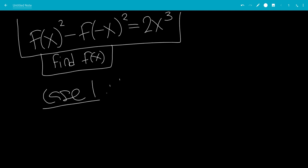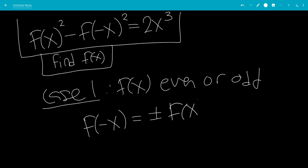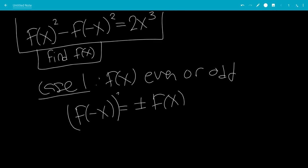Case 1: f(x) is even or odd function. That means f(-x) is ±f(x). So let's square both sides. You'll see something interesting.